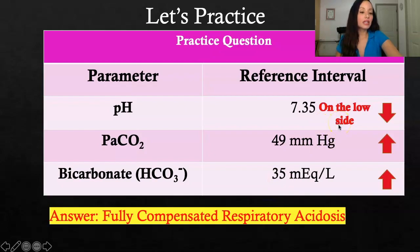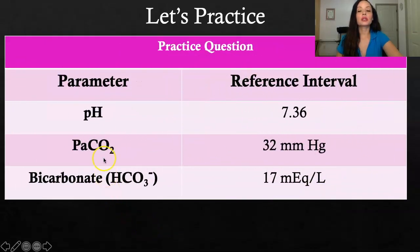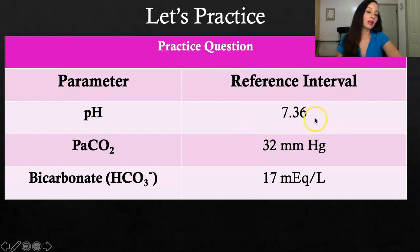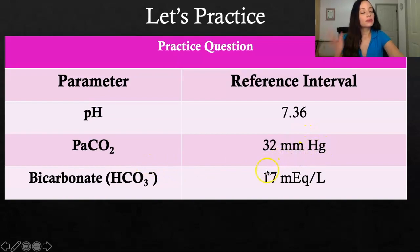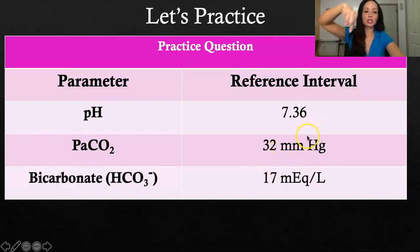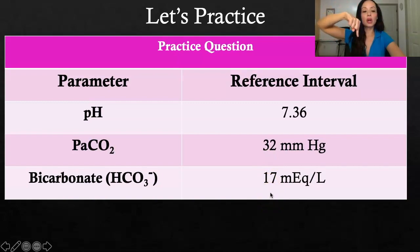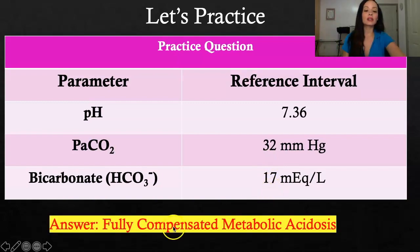Practice question four: pH is 7.36 — within normal range, so it's going to be fully compensated. It's less than 7.4, so it's acidosis. CO2 is low — below 35 to 45. Bicarb is also low — below 22 to 26. They're all facing down in the same direction, so it's fully compensated metabolic acidosis — down, down, down.